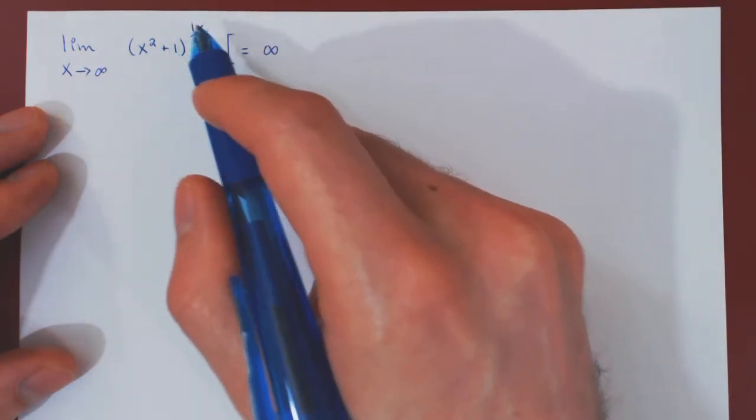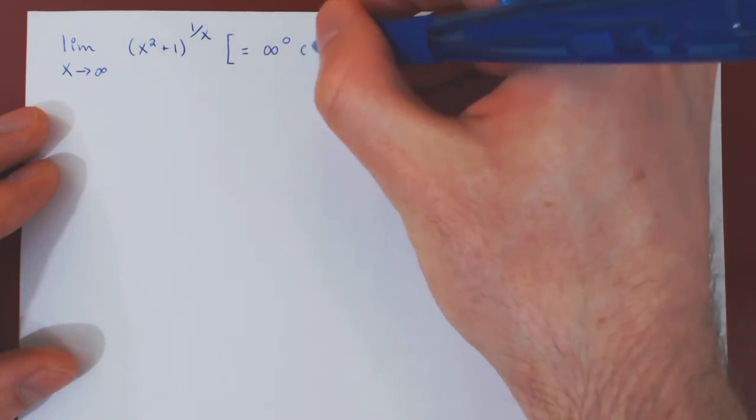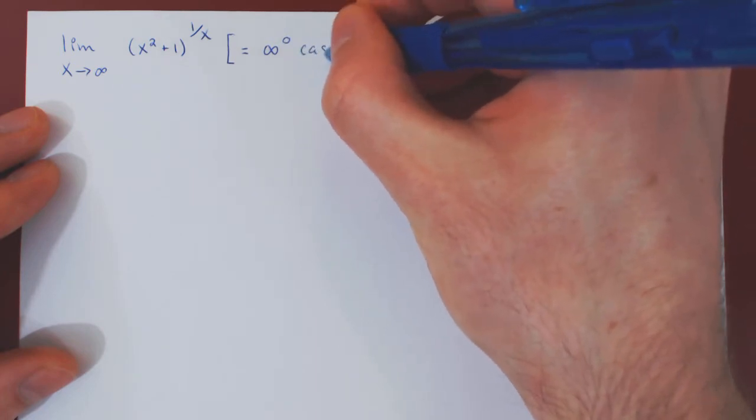And as x tends to infinity, 1 over x tends to 0. So we have a case of the form infinity to the 0 case.